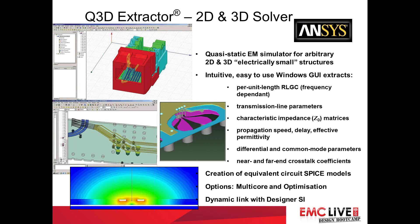Here are some examples from ANSYS of simulating small structures, like an RJ45 Ethernet connector here, some kind of structure on a printed circuit board — to extract the field-solving parameters for these various components.